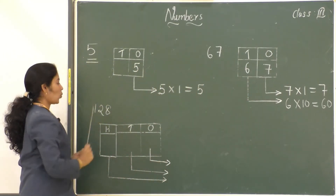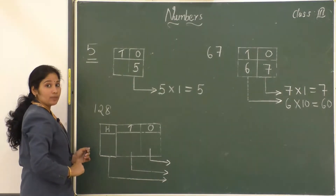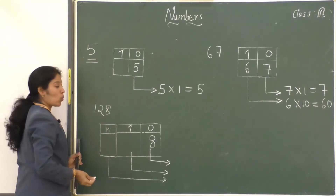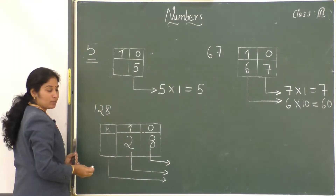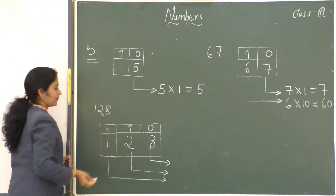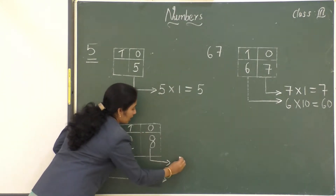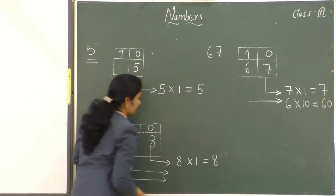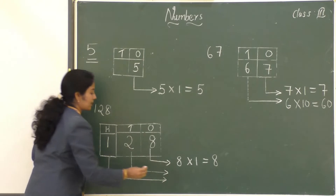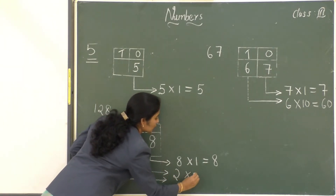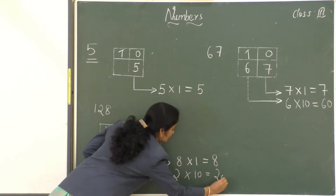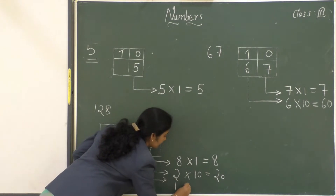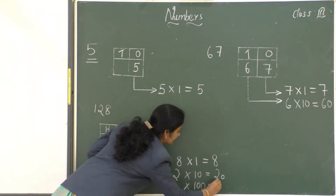Let's take another example: 128. Is it a two-digit or three-digit number? Three-digit. While representing in the place value chart, 8 comes under the ones place, 2 comes under the tens place, and 1 comes under the hundreds place. It means 8 times 1 is equal to 8, 2 times 10 is equal to 20, and 1 comes under the hundreds place — 1 times 100 is equal to 100.